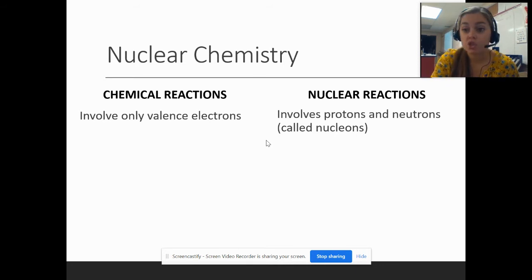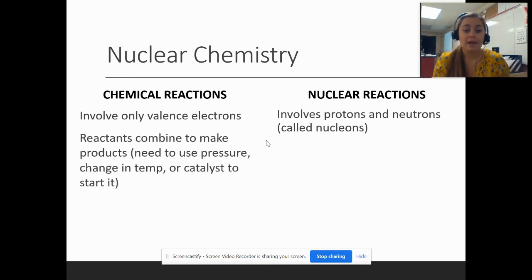So how do these reactions start? Well, chemical reactions, we know that the reactants combine, so you'll usually have one or two, maybe three reactants that you mix together and they form the products. Now we often need to see a pressure change or an increase in temperature. Maybe a catalyst is used to start this reaction.